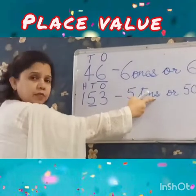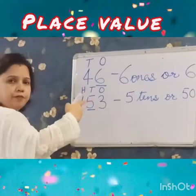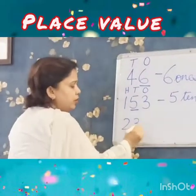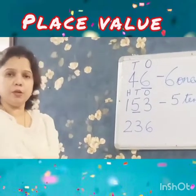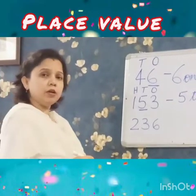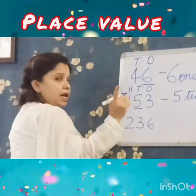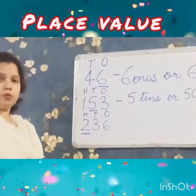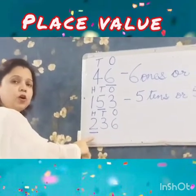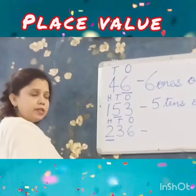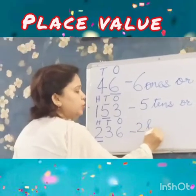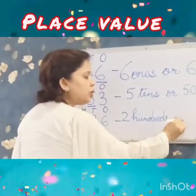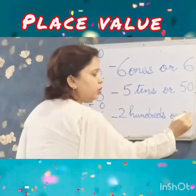You can write in words 5 10's, or you write the number 50. Both are correct. Now look at another example: 236. In a 3 digit number you have to write 3 places. Starting from the right it is O, T, H. I have underlined 2, so we have to write the place value of 2. 2 is in the place of 100's, so the place value is 2 100's, or we can also write the number 200.